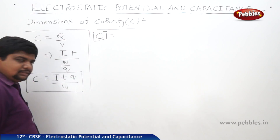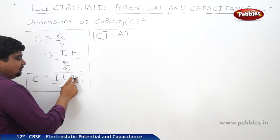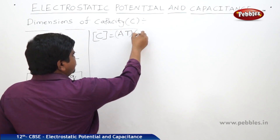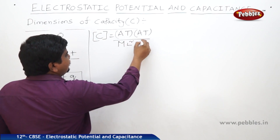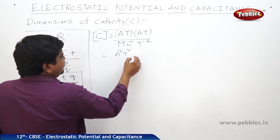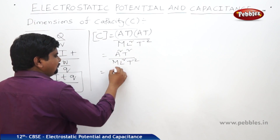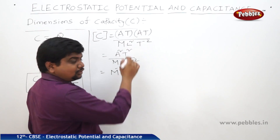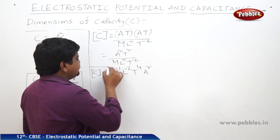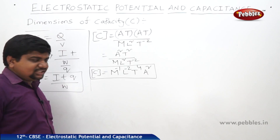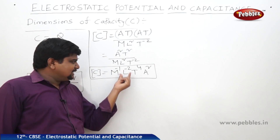The current i has symbol A (ampere), time t, and charge is i·t. Therefore C equals A·T divided by work, which is ML²T⁻². This gives A²T² divided by ML²T⁻², and writing in proper order: M⁻¹ L⁻² T⁴ A². This is the dimensional formula of capacitance.